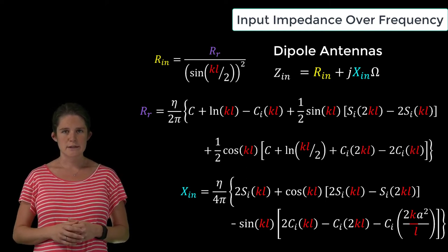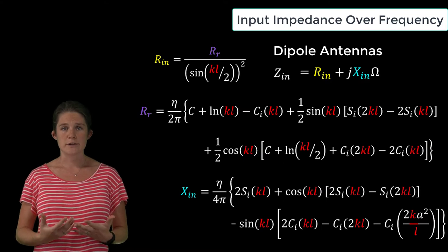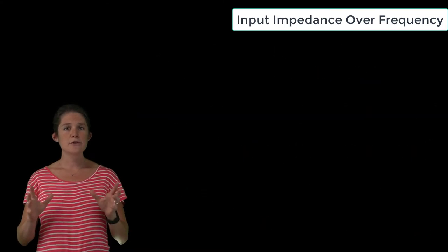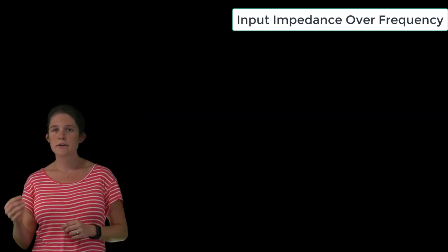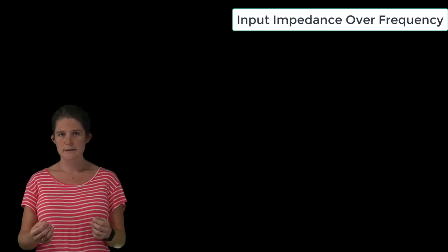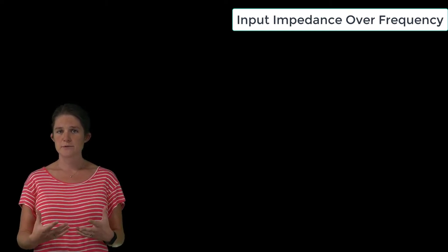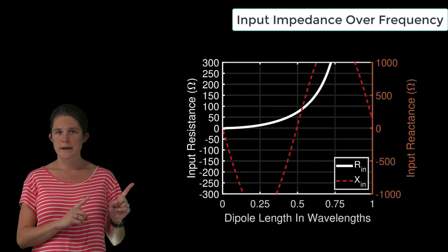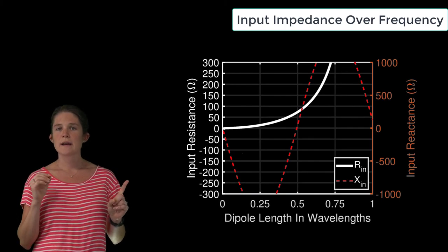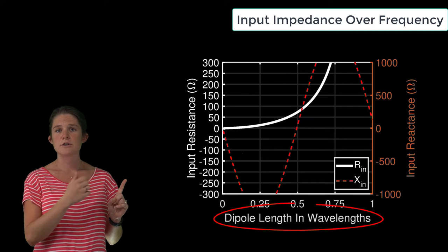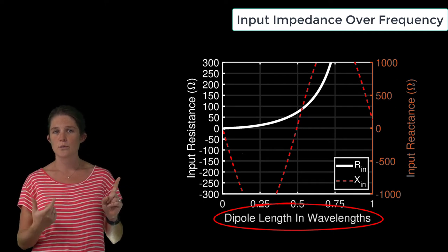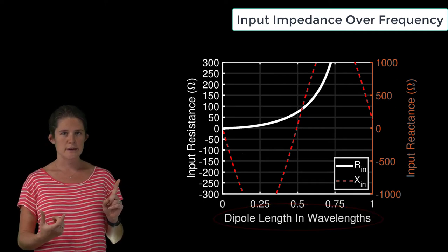In the meantime, though, let's go ahead and look at a few important features. If you use the equations we've just given to calculate the real and imaginary components of the input impedance and plot them versus frequency, this is what you'll get. Note that I have stated the x-axis in terms of dipole length in wavelengths, rather than directly in terms of frequency.